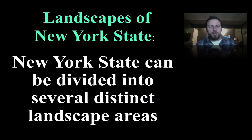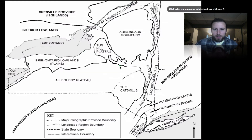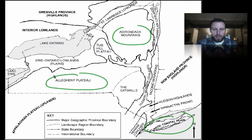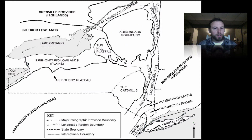New York State can be divided into several different landscape areas. On reference table page two, you can see the different landscape regions around New York State — everything from the Adirondack Mountains to coastal plains and even the Allegheny Plateau, which makes up the Catskills. We have a huge variety of different landscape regions, and as we went over in the last screencast, these different areas have different types of rocks.